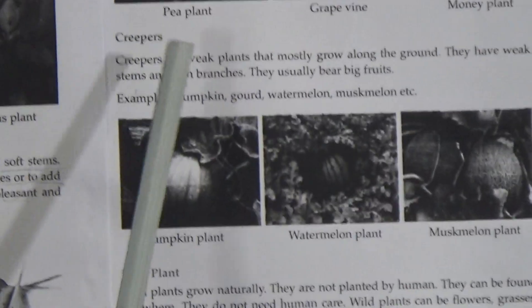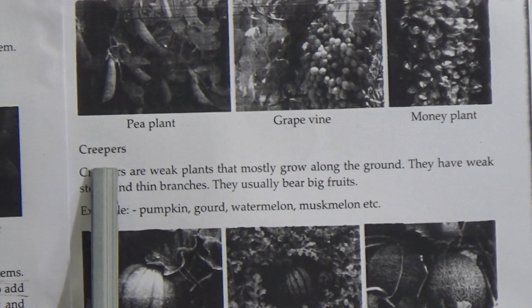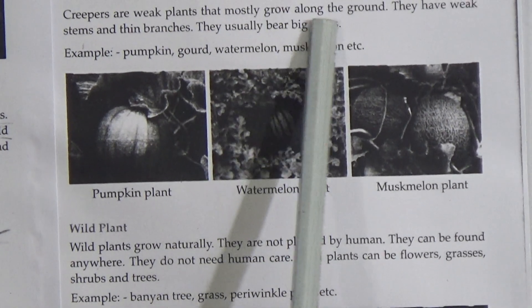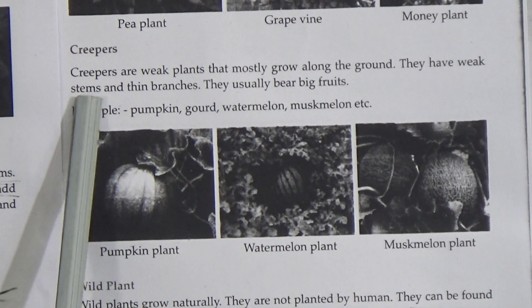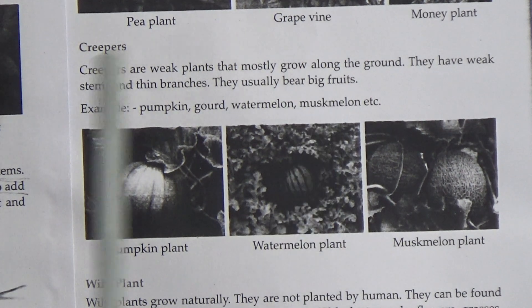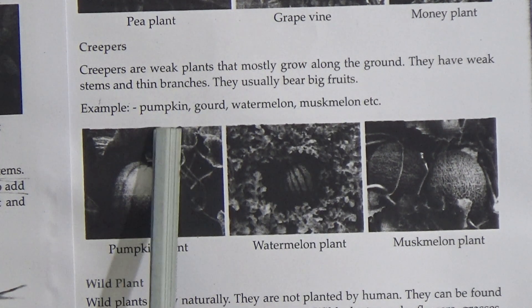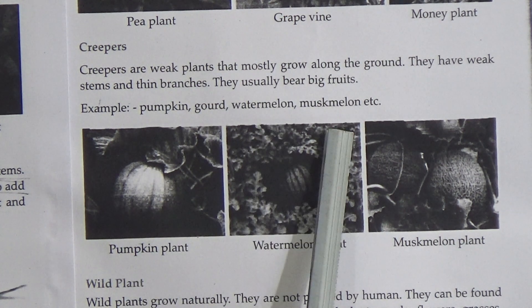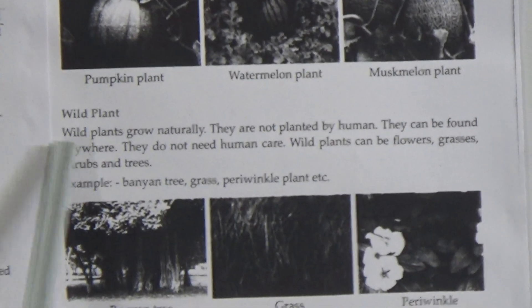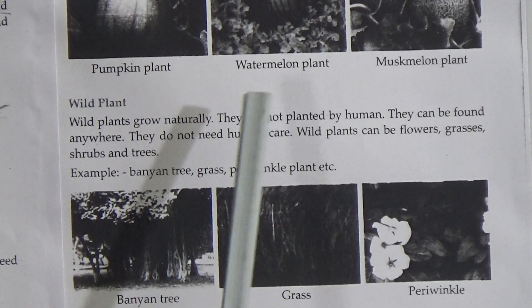Now come to page number ten — creepers. Creepers are weak plants that mostly grow along the ground. They have weak stems and thin branches. They usually bear big fruit. Examples: pumpkin, cucumber, watermelon, musk melon. Here is the picture of pumpkin, watermelon, and musk melon plant.